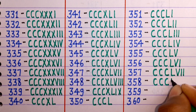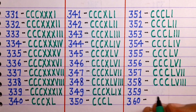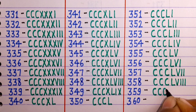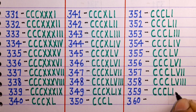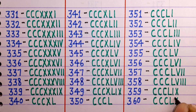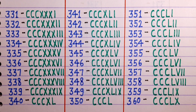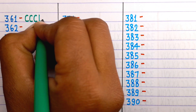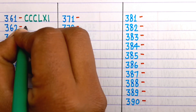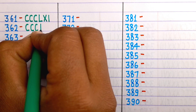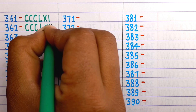358 is CCCLVIII. 359 is CCCLIX. 360 is CCCLX.